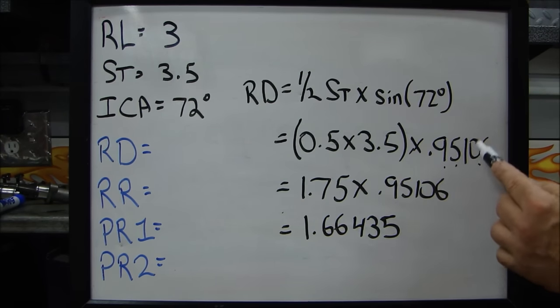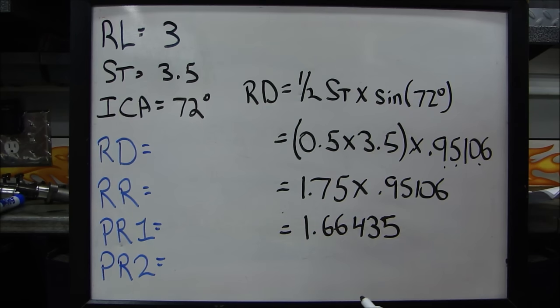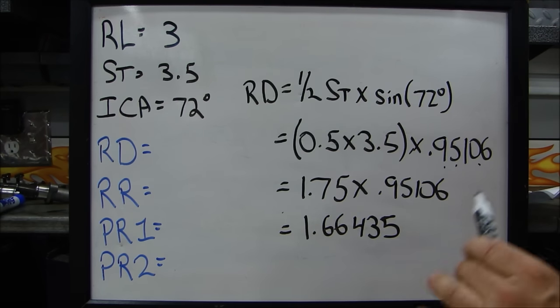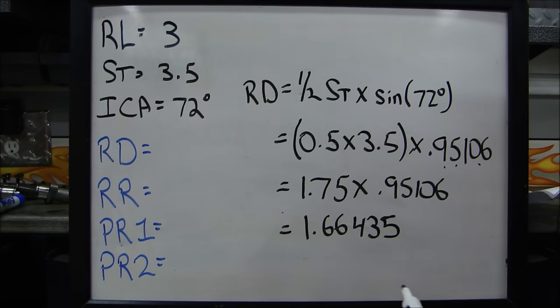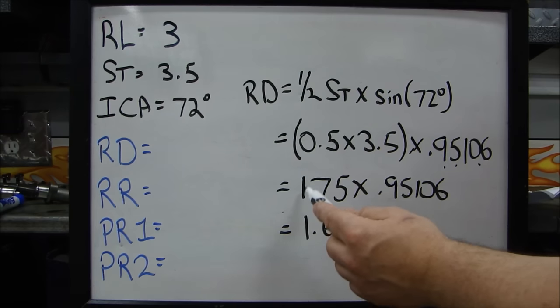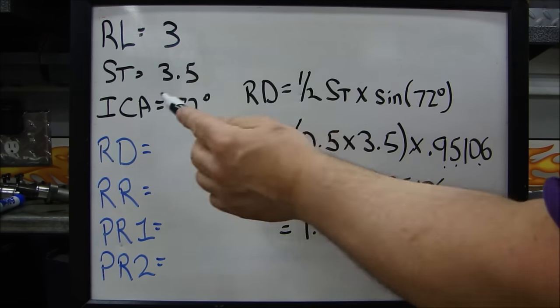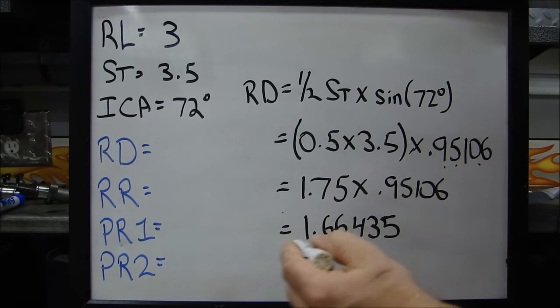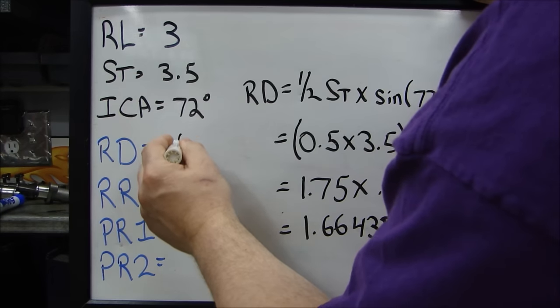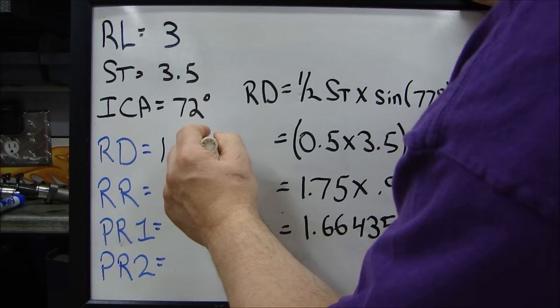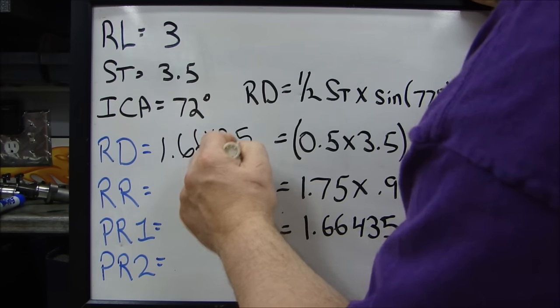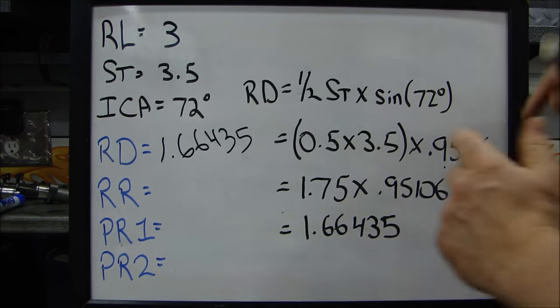I said set your calculator to float to 5. You'll get 5 decimal places. Use all the numbers. Don't truncate the numbers. Use all of the digits. You need all of them every time. Don't change anything. This comes out to 1.75 times 0.95106. So our RD is 1.66435. Okay.